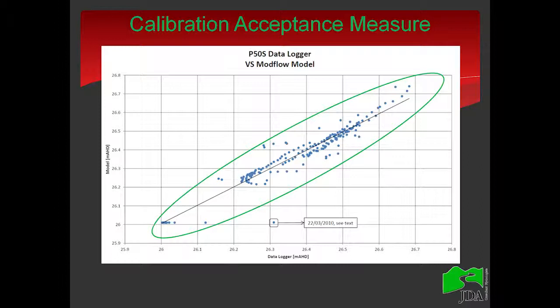This is the qualitative way to estimate the acceptance measure. If my model was perfect and we plotted the data logger versus the model, we should have a straight line. There is no such thing as perfection in modeling, but there is a clear linear trend — except for one point, which is the erratic event of March 2010, where the rain-gauging station probably recorded more than what actually occurred on site.